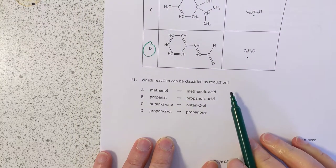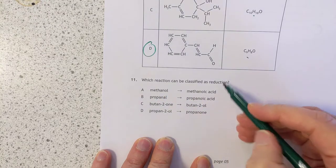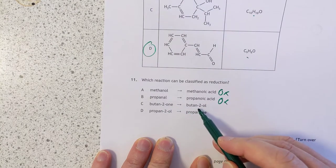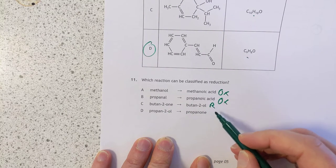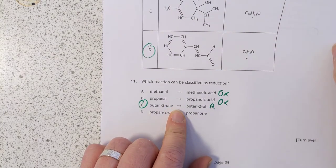Question 11: Which is classified as reduction? Methanol to methanoic acid, that's oxidation. Propanol, that's oxidation as well. Butanone back to an alcohol, that looks like reduction to me. And that is also oxidation. It's C. You need to go and learn your organic, I'm afraid. There's no magic to these. It's just know your stuff.